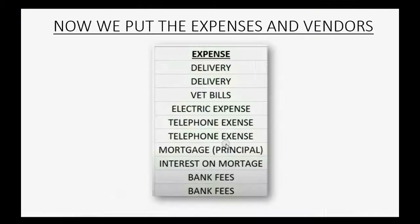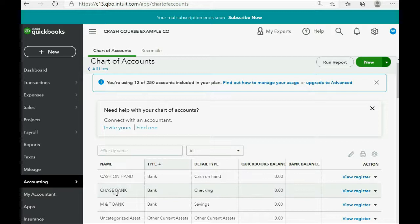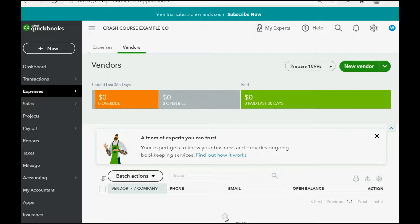Now we put in the related vendors — meaning whom we pay — in the Vendors List. In our example we will only put the names. In a real situation you could reopen the list and add address, email, or any other data you'd like to save with your vendors. The way to open the Vendors List is to click Expenses, then go to Vendors. Right now the vendor list is empty, and it's very simple to add a new vendor.